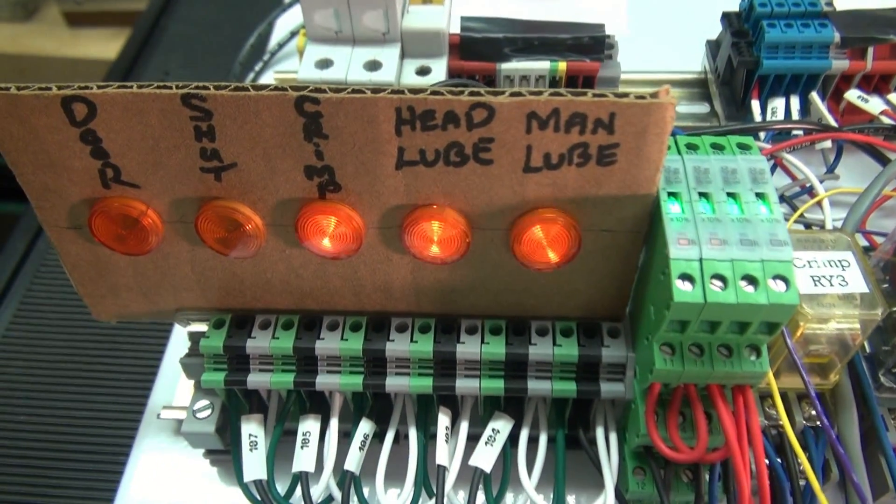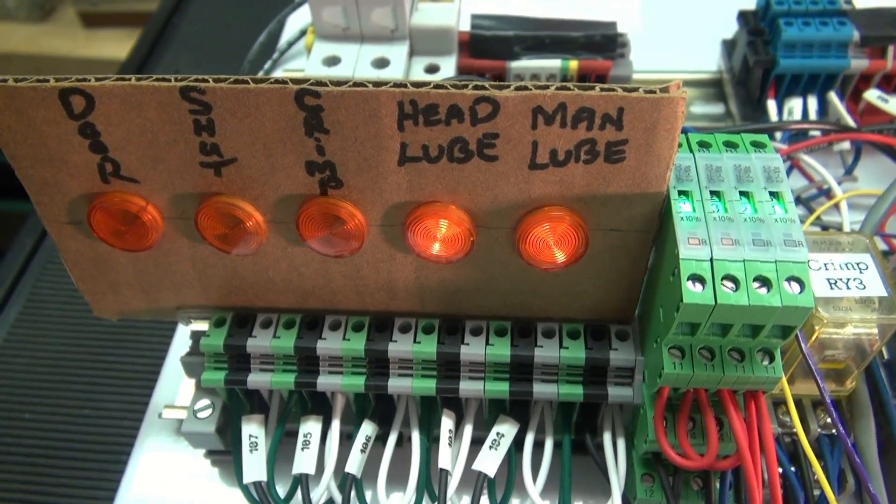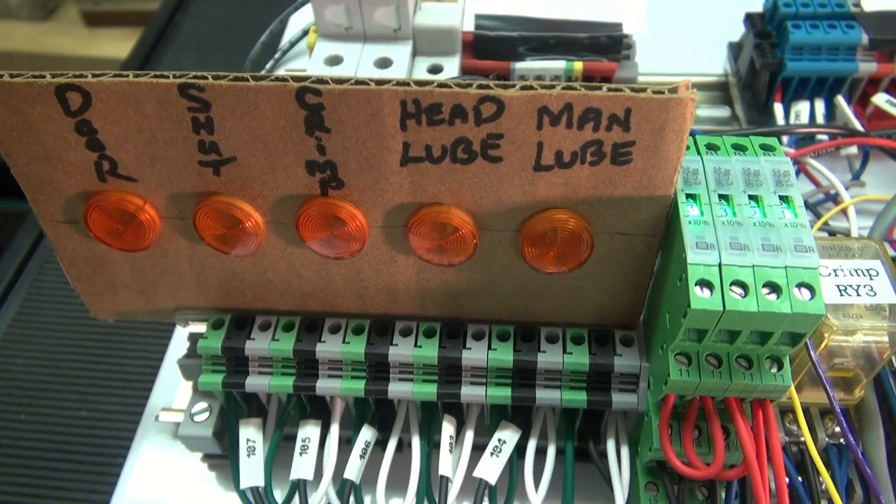We hit the knee switch. Let's go back to the outputs. Saw the crimp. The lube stay on for a delay and shut off.